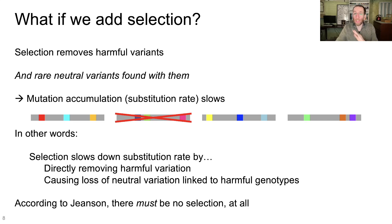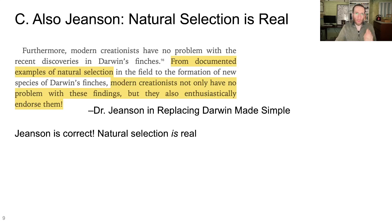Now remember, according to Jensen, there must be no natural selection happening at all. That must be the case in order for his time to most recent common ancestor calculations to work. By making that argument that way, Jensen is very strongly siding with people like Dr. Randy Galusa, people who say that natural selection isn't actually a real evolutionary process. And he's taking a strong position against other creation scientists who say that natural selection is a real thing that happens and affects populations. Creation scientists like Dr. Nathaniel Jensen. This is a short excerpt from Replacing Darwin Made Simple, the kind of simplified version of his 2017 book Replacing Darwin.